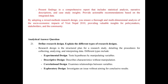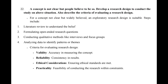Question 21: Define research design. Explain the different types of research designs. Research design is the structured plan for a research study detailing the procedures for collecting, analyzing, and interpreting data. Different types include: experimental design — tests hypotheses by manipulating variables; descriptive design — describes characteristics without manipulation; correlational design — examines relationships between variables; and exploratory design — investigates an issue without aiming for conclusive results.